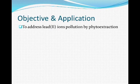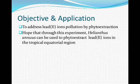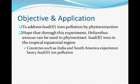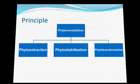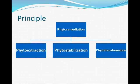The aim of this experiment is to address lead ion pollution in the world using phytoextraction. We also hope that through this experiment, sunflowers can be used to phytoextract lead ions in the tropical equatorial region for countries like India and South America. This project is based on the idea of phytoremediation, which includes phytoextraction, phytostabilisation, phytotransformation, and more. We will be focusing on phytoextraction in this project.